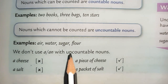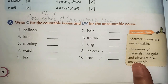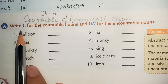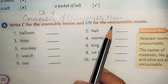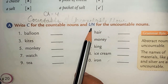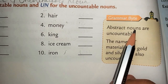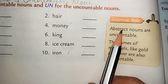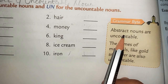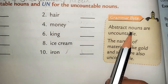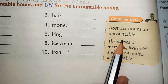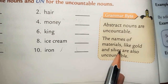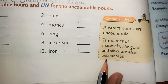Now, on the basis of this concept, we will do the exercise on page number 20. Write C for countable noun and UN for uncountable noun. Countable nouns will get a capital C, and uncountable nouns will get UN. Before starting, let us read the hint: abstract nouns are uncountable nouns. Abstract nouns are those that describe ideas, emotions, or feelings — for example, happy, sad, excited. These are all abstract nouns and are uncountable. Similarly, names of materials like gold and silver are also uncountable nouns.